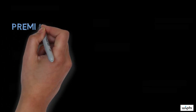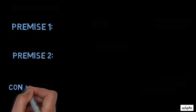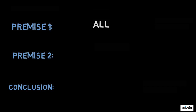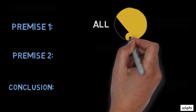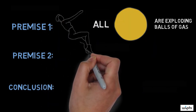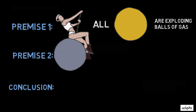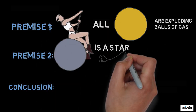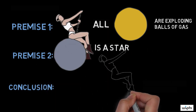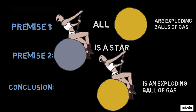Before we look at some more problematic examples, let's start off with a simple one to see how it works. Consider the following argument. Premise 1: all stars are exploding balls of gas. Premise 2: Miley Cyrus is a star. Therefore, Miley Cyrus is an exploding ball of gas.